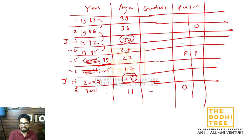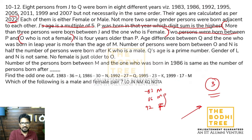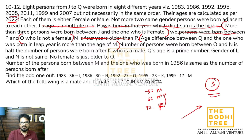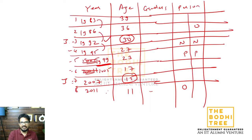N is 4 years older than P, matlab N is 27 - yahan par aayega. Older hai, younger nahi. Age difference between Q and the one who was born in leap year is more than the age of M. Leap year matlab jo 4 se divisible hona chahiye. Ek hi leap year hai hamara, toh koi tension nahi hai. Age difference between Q and the one born in leap year is more than the age of M.